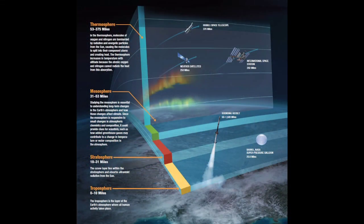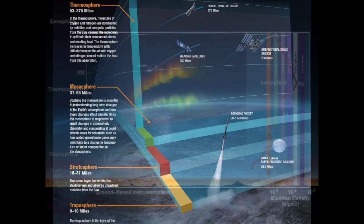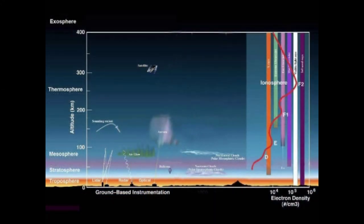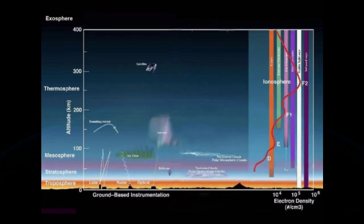The atmosphere can be divided into layers based on temperature. These layers are the troposphere, the stratosphere, the mesosphere, and the thermosphere. A further region beginning about 500 km above Earth's surface is called the exosphere.